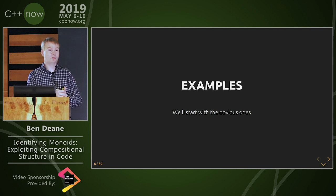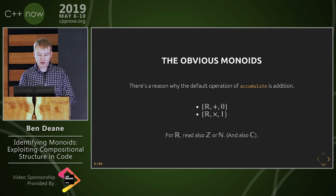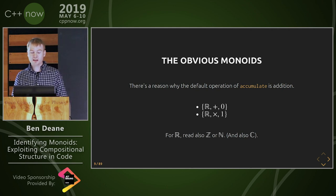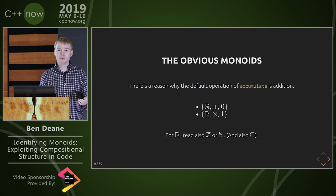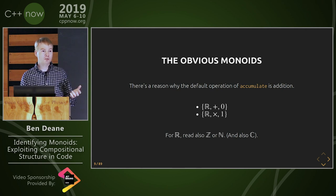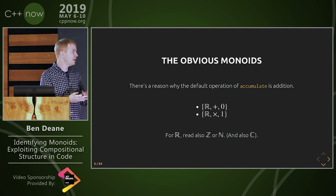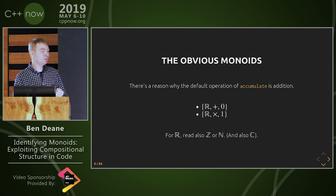Let's start with the obvious examples. I know all of you have known about monoids since grade school because we learn addition. Every grade school child knows that when you add two integers, you get an integer. They know that it doesn't matter what order they add them up in, they still get the right answer — so they know about associativity. And they know that if they add zero to anything, it doesn't change. So addition on the integers with identity zero forms a monoid. Similarly, multiplication on the integers — real numbers, integers, natural numbers, complex numbers — multiplication and addition are the basic monoids you run into early in life.